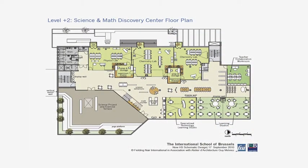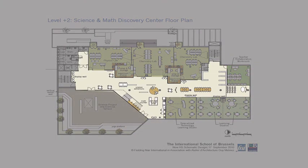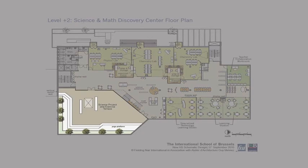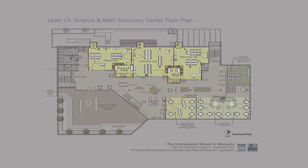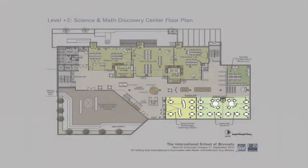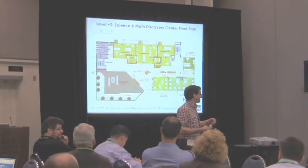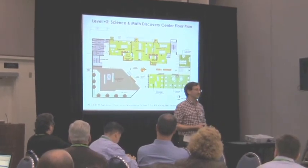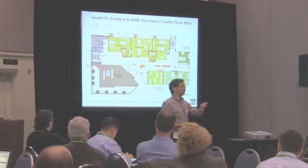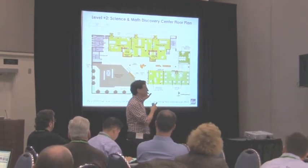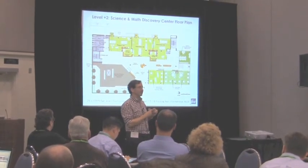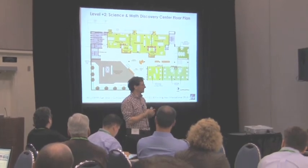I'm flashing this plan because this is going to be one of three plans you'll have a choice at your table to do a little bit of curriculum mapping on. You can see here you have a common area that opens up onto a science project terrace. These are physics and chemistry labs, prep areas, and these are learning studios. The curriculum challenge is: how do we work with 150 students in a space like that? Where are they and what are they doing at any given time?